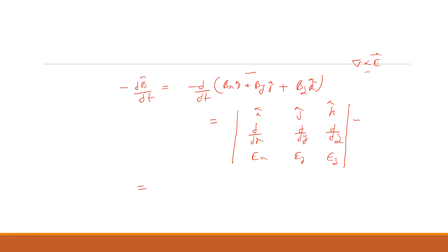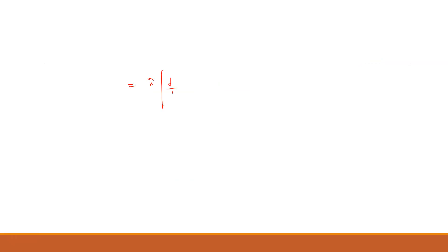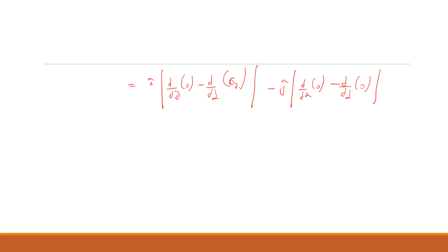Now, which two components are zero? EX is zero and EZ is zero, because the electric field is traveling along the Y direction. Expanding the determinant, we get: î(∂/∂y·0 − ∂EY/∂z) − ĵ(∂/∂x·0 − ∂/∂z·0) + k̂(∂EY/∂x − ∂/∂y·0).